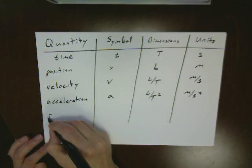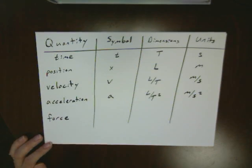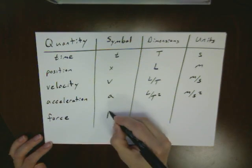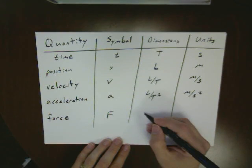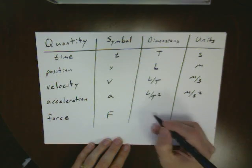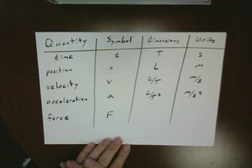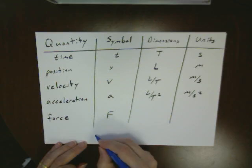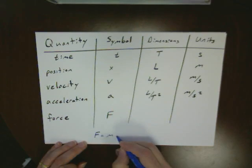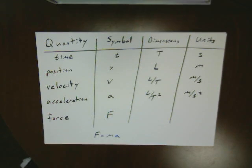Now, we add force. Force is generally given a symbol of a capital F. How do we know what its dimensions and its units are? Well, if I use our dimensional analysis, we come back to what our equation says. Equation is force is mass times acceleration.